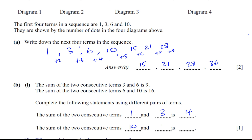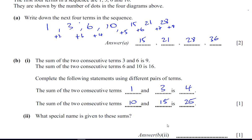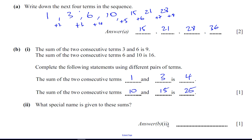Then it says, what special name is given to these sums? So the sums they're talking about are these numbers here.